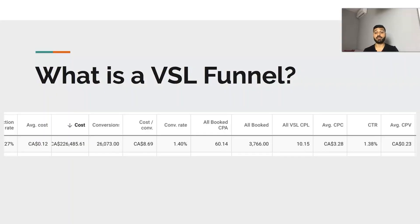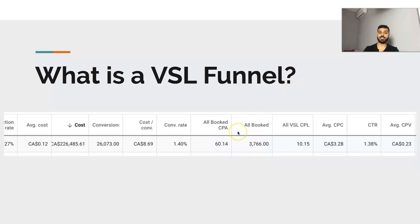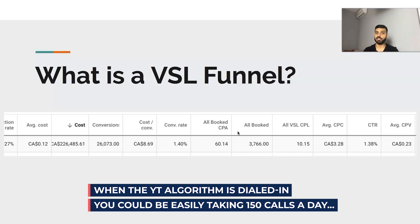This was the results of one client in the previous month where we generated over 3,700 calls at $50 a call. We spent a lot of money, but we got a lot of results, and they were extremely profitable to the point where it was just ridiculous. When the YouTube algorithm is dialed in, you can get calls on autopilot — if you have the systems for it, you can be taking 100 to 150 calls a day. There's a ton of opportunity with this.